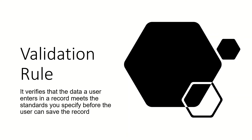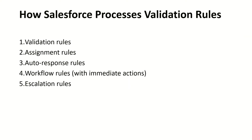How does Salesforce process validation rules? Whenever you click Save, it runs validation rules first. If the data doesn't meet any one of the validation rule criteria, it proceeds to the next step — assignment rules, auto-response rules, workflow rules, and escalation rules. If the criteria is met for any one of the validation rules for that particular field, it will throw an error message.